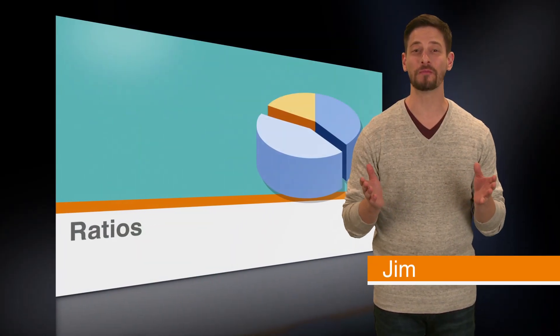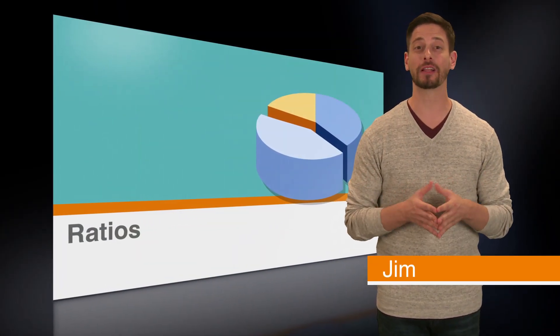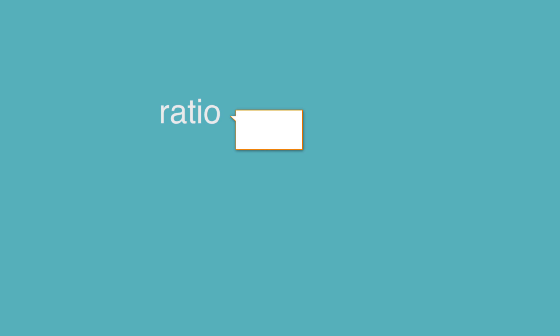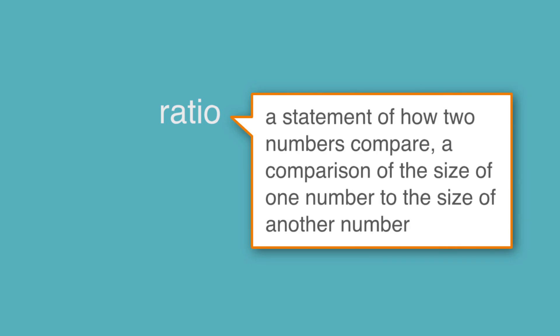In this lesson, we're going to talk about ratios. Let's start out by looking at the definition. A ratio is a statement of how two numbers compare. It's a comparison of the size of one number to the size of another number.